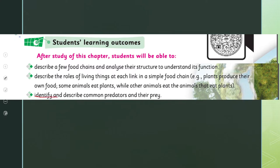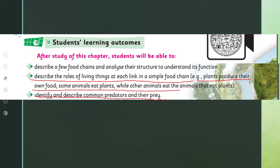By the end of today's lecture, all students will be able to identify and describe common predators and prey. They will also be able to describe the roles of living things at each link in a food chain. Plants produce their own food, some animals eat plants, while other animals eat the animals that eat plants.